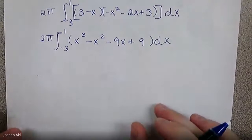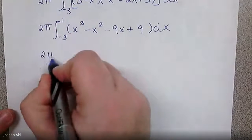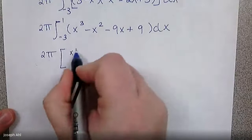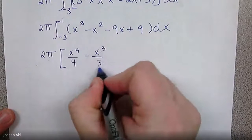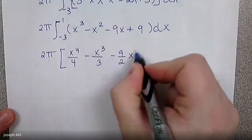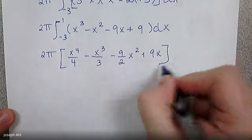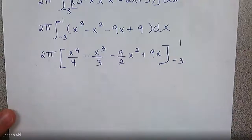So now we can use our anti-power rule pretty quickly here to get two π times x to the fourth over four minus x cubed over three minus nine halves x squared plus nine x.